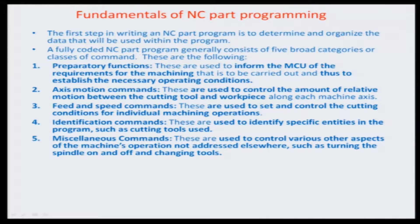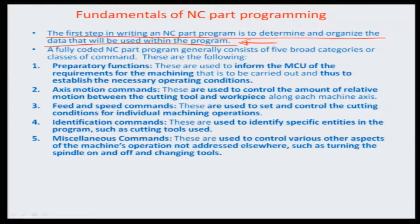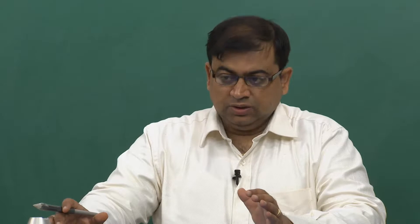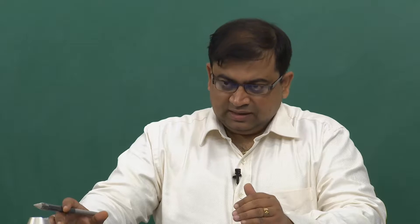That covers the word address format. Now we want to look into the first step of writing an NC program. Once the controller specification has been given — and it comes with the machine — you must have prior knowledge of the controller specification before being able to start programming on the NC machine. The first step in writing an NC part program is to determine and organize the data that will be used within the program to reflect the exact machining operation you want the machine to execute, as defined by the part drawing or dimensions of the part to be machined.